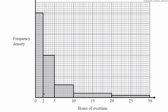Looking at the first bar: there are about four squares across and five up, giving 20 squares per section. There are eight such sections, so eight times 20 is 160. There are 160 squares in the first bar. The second bar goes from two to five.